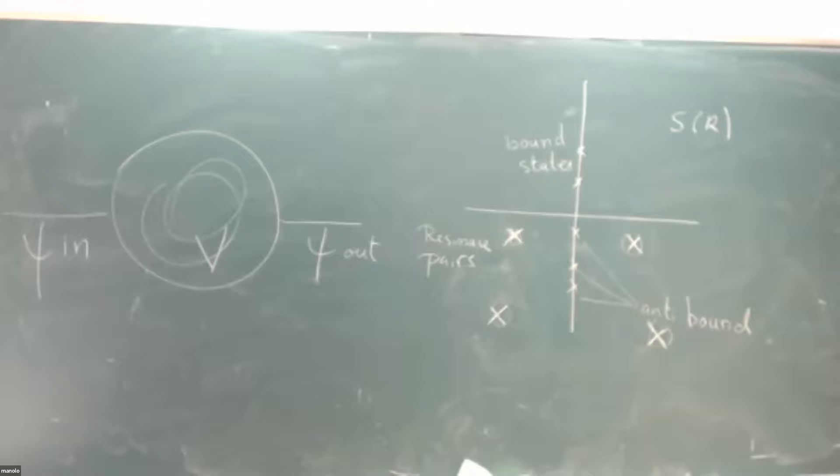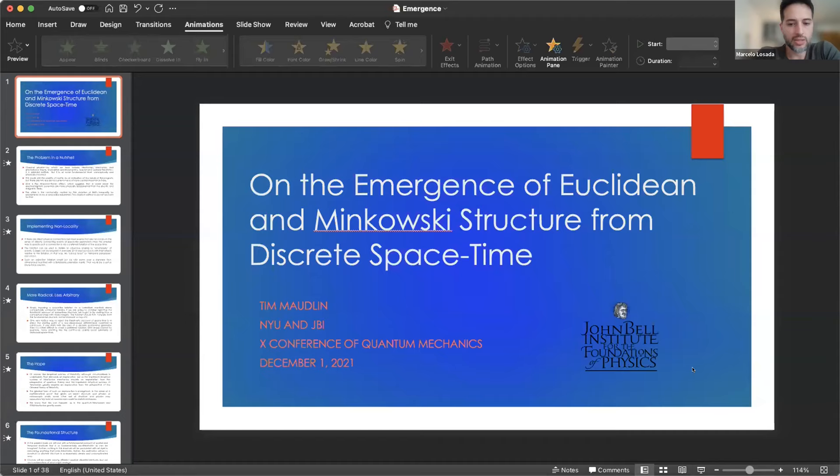The next speaker is Tim Mowling from New York University, who is going to talk about the emergence of Euclidean and Minkowski structure from discrete spacetime. Please Tim, when you want, you can start.